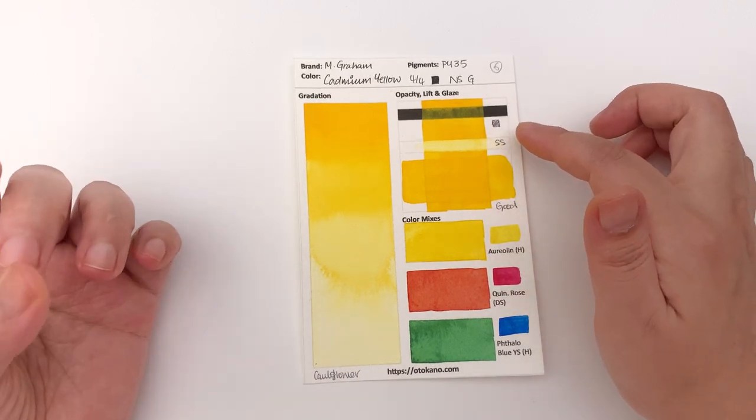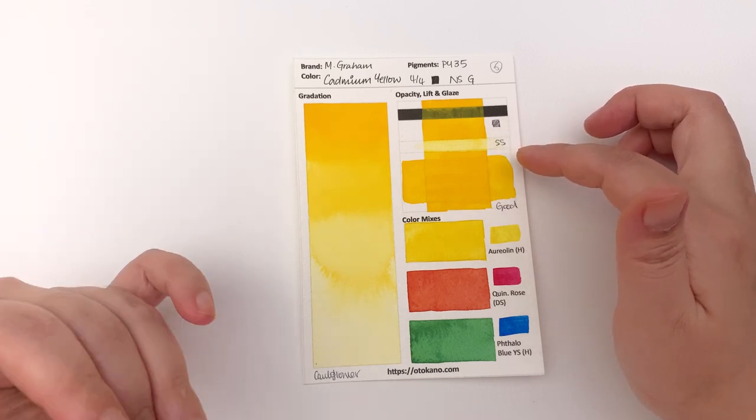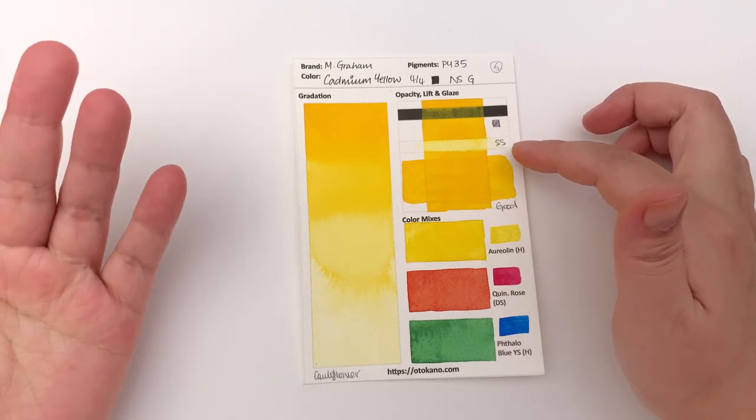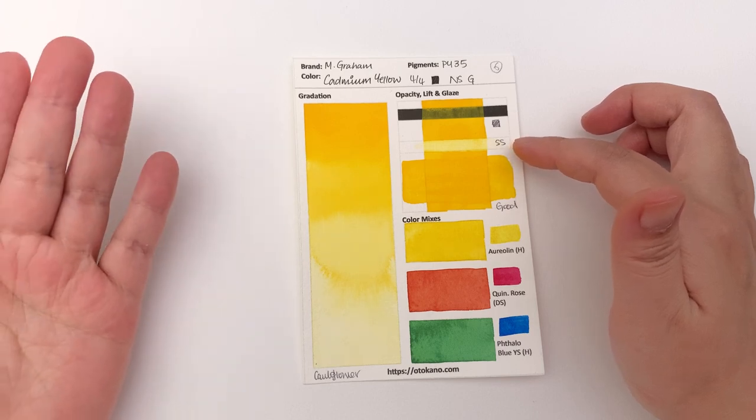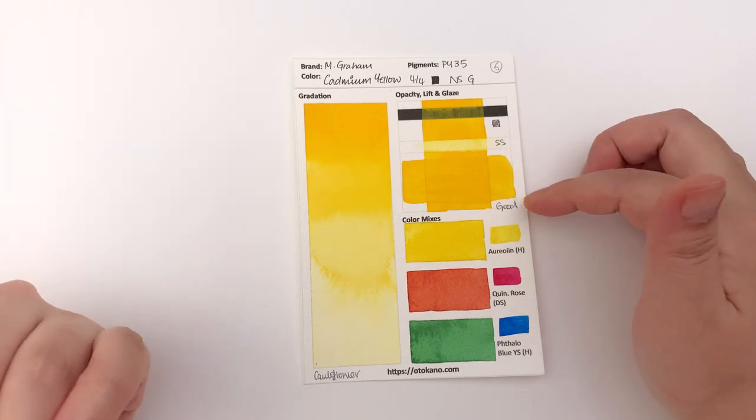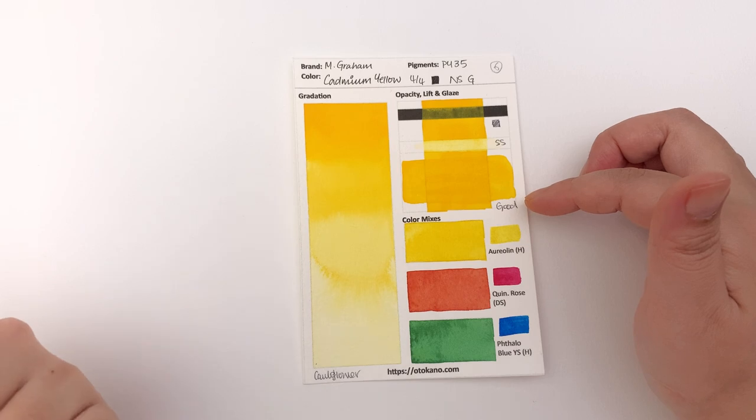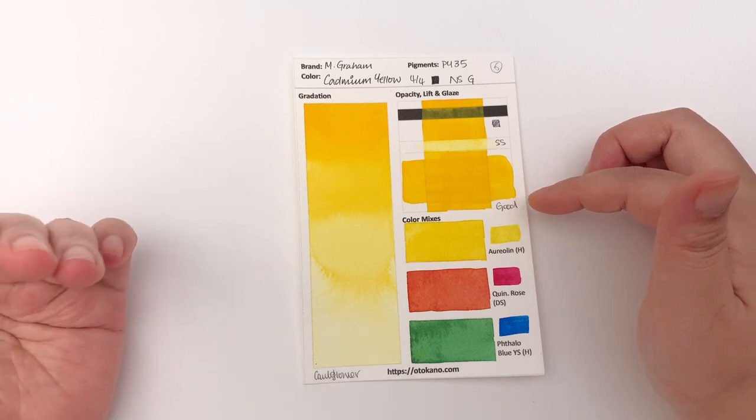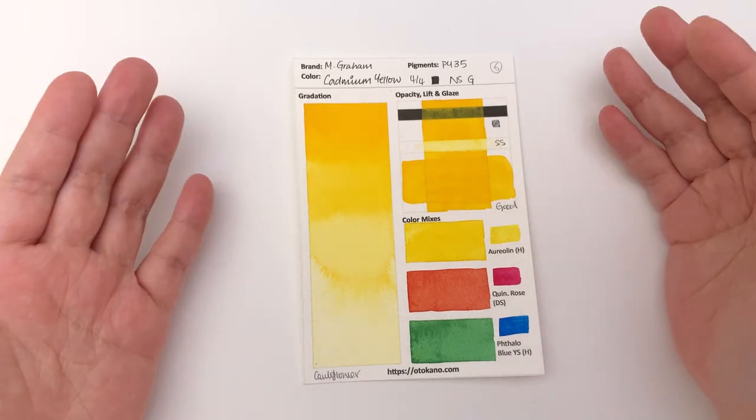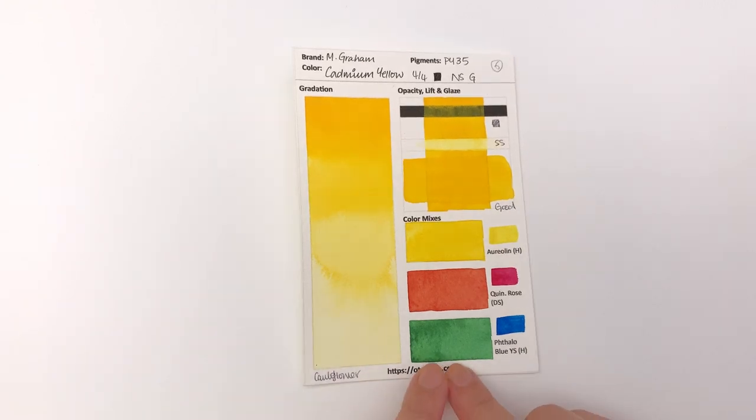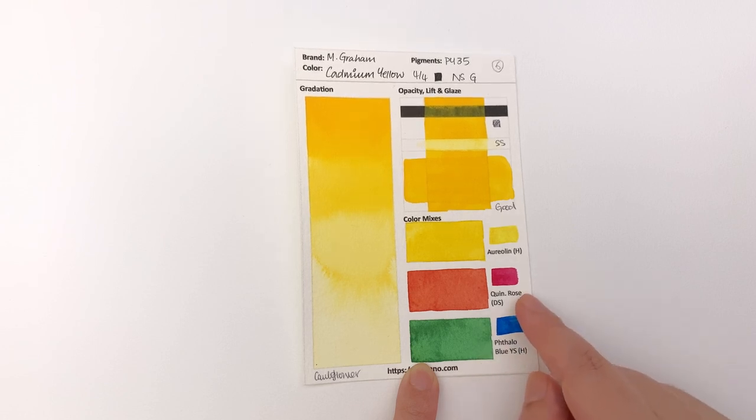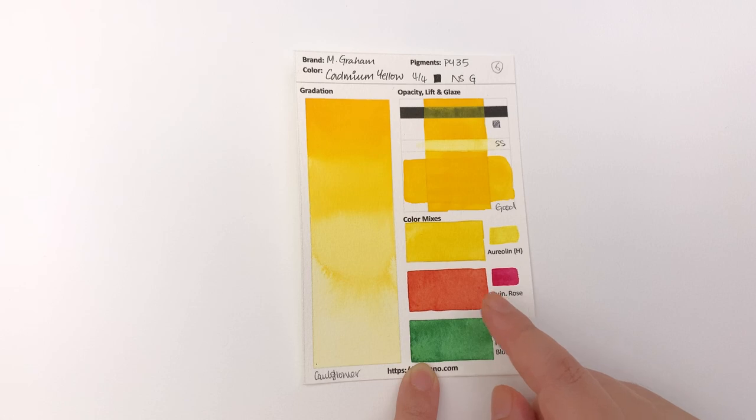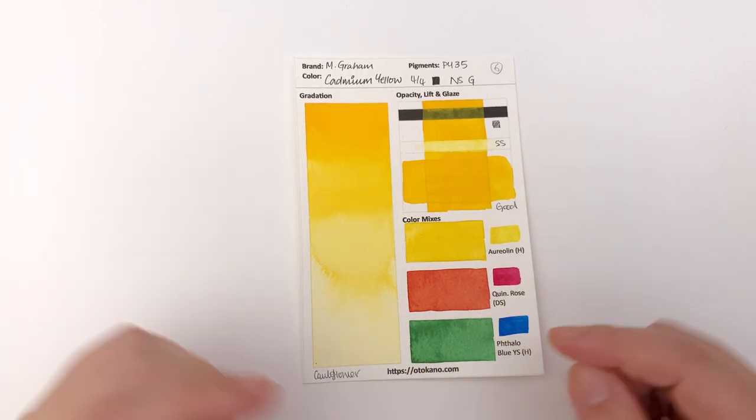It is classified as opaque and I would agree with that. It's classified as non-staining and I would disagree with that. It's at least a semi-staining color and it is a good glazer. Interestingly it is classified as granulating. On its own you can't really see the granulation and you can just about see some of the granulation if you mix it with other colors like quinacridone rose and phthalo blue that makes the color mixture much darker.